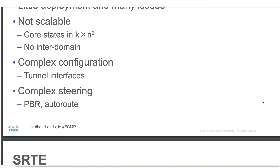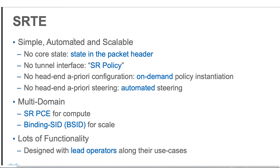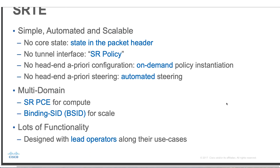SRTE stands for Segment Routing Traffic Engineering. It is simple, automated, and scalable. There is no core state — meaning state is kept in the packet header rather than network nodes. There is no tunnel interface as with MPLS, and there is no RSVP state that needs to be maintained. There is also no hidden prior configuration needed on intermediate nodes, and we can use on-demand policy instantiation and automated steering.